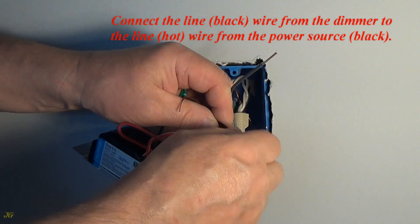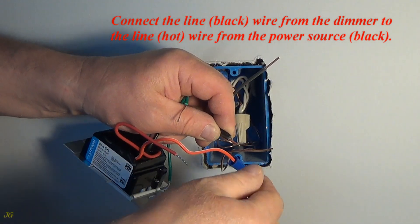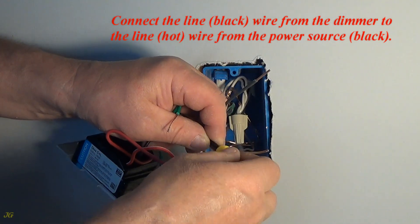Connect the line (black) wire from the dimmer to the line (hot) wire from the power source (black).